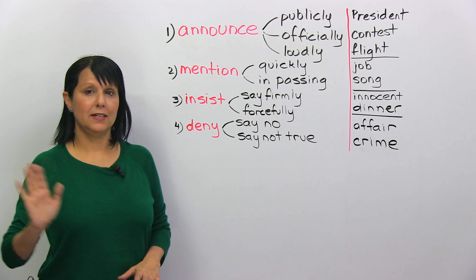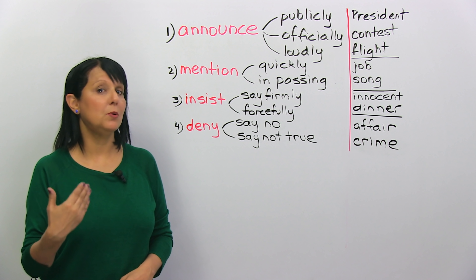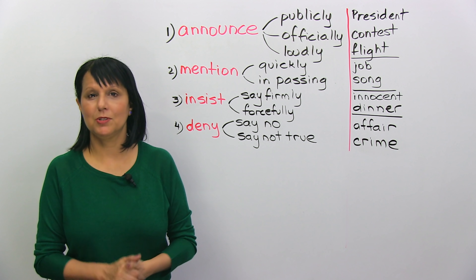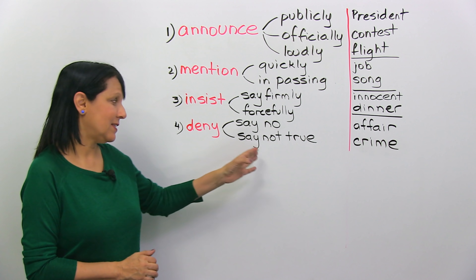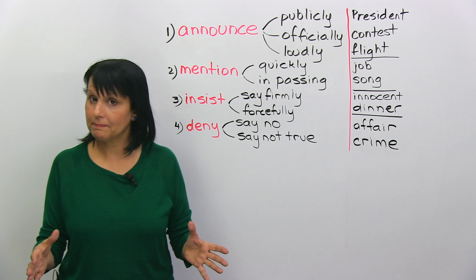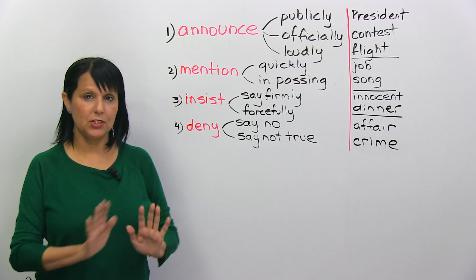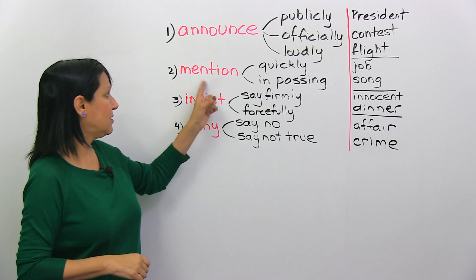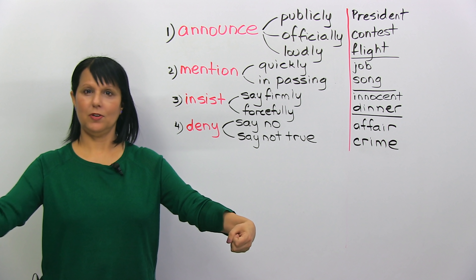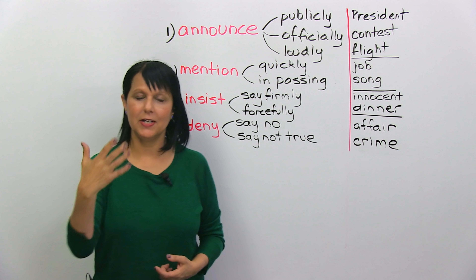The fourth word is 'deny.' To deny means to say 'no' or 'it's not true.' For example, a famous president some years ago denied that he was having an affair. Or, she denied being present at the scene of the crime — meaning she said 'no, I wasn't there.' If you do the body language actions for these words, they'll help you link the vocabulary in your mind.